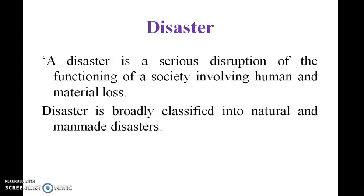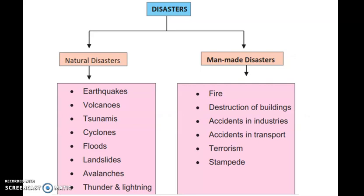Disaster is broadly classified into natural and man-made disaster. Natural disasters include earthquakes, volcanoes, tsunamis, cyclones, floods, landslides, avalanches, and thunder and lightning. Man-made disasters include fire, destruction of buildings, accidents in industries, accidents in transport, and terrorism.